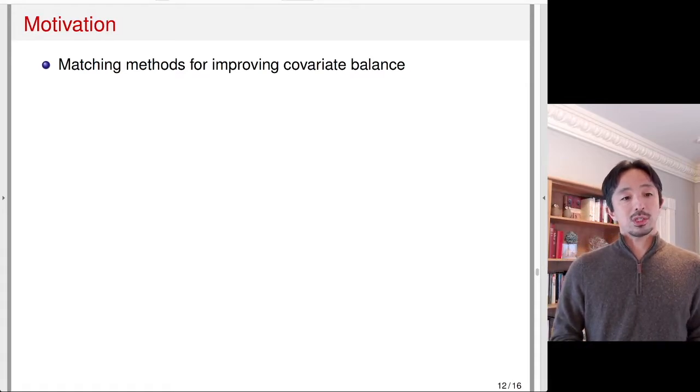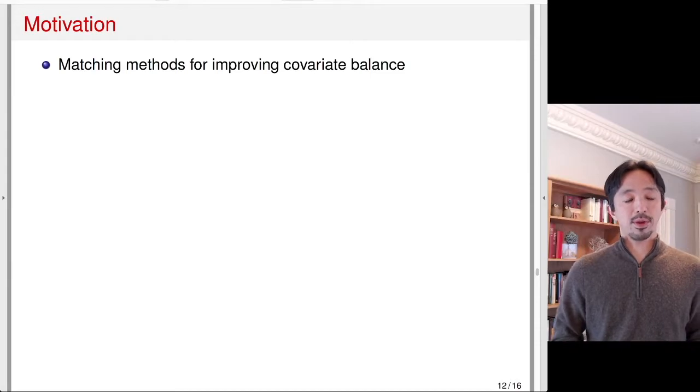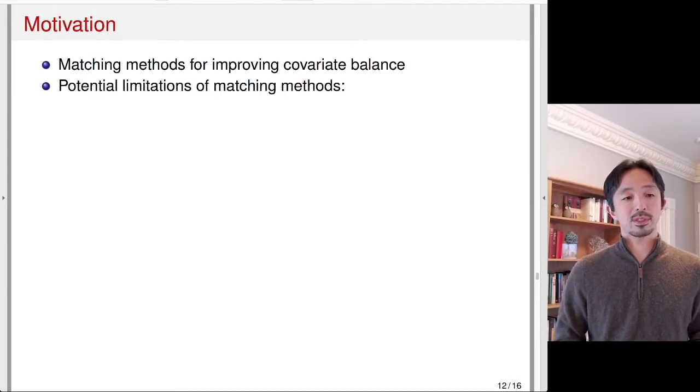We next discuss weighting methods. A weighting method is a generalization of matching methods to improve covariate balance.